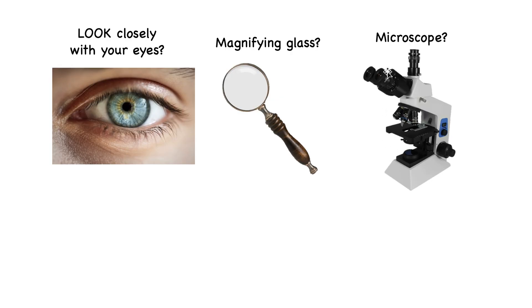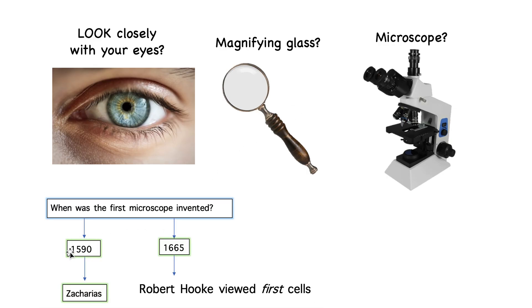Microscopes are fairly straightforward and interesting. This is a modern fancy one. When microscopes were invented back in the 1590s, they looked very different — much more old-fashioned and not nearly as good. Over time, as technology progressed, they improved. Importantly, a man called Robert Hooke was the first — about 100 years after the microscope's invention — to actually use one to visualize the first cells, which back then didn't even have a name yet.